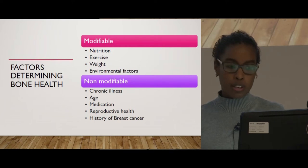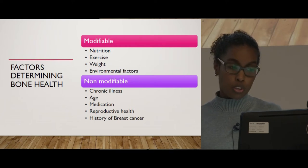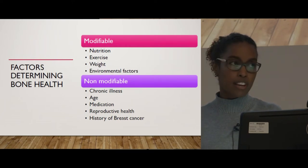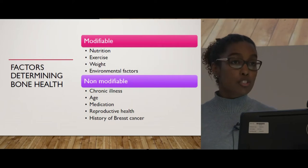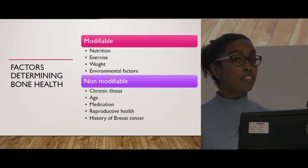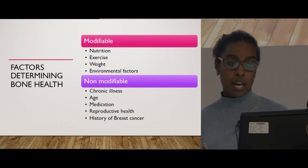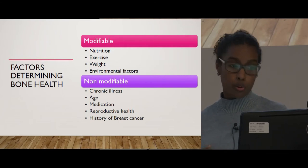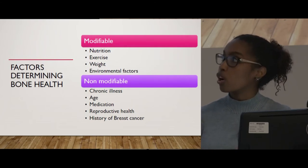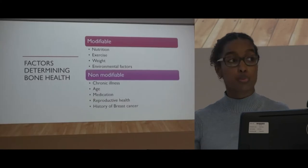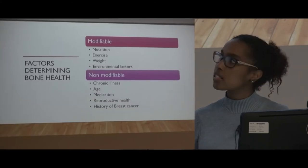The modifiable factors are nutrition, exercise, weight, and environmental factors. These are important because even before the menopause, you can actually adjust and intervene based on those modifiable factors. The non-modifiable factors include age, which we've already discussed.